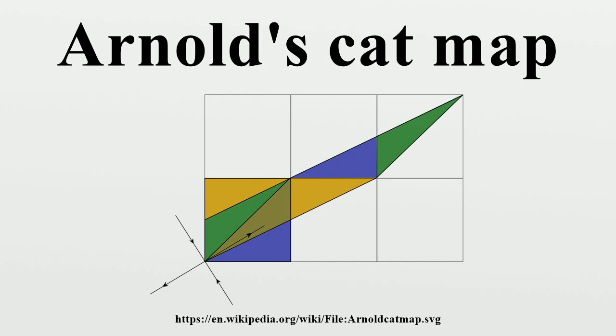The discrete cat map: It is possible to define a discrete analogue of the cat map. One of this map's features is that the image, being apparently randomized by the transformation, returns to its original state after a number of steps, as can be seen in the picture to the right. The original image of the cat is sheared and then wrapped around in the first iteration of the transformation.